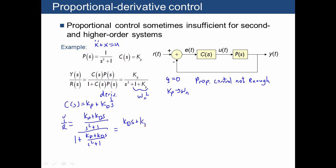Kd s plus kp divided by s squared plus kd s plus kp plus 1, where this term lines up with 2 zeta omega n, and then this term lines up with omega n squared. So we can select kd and kp in order to choose any value of zeta and omega n that we like.